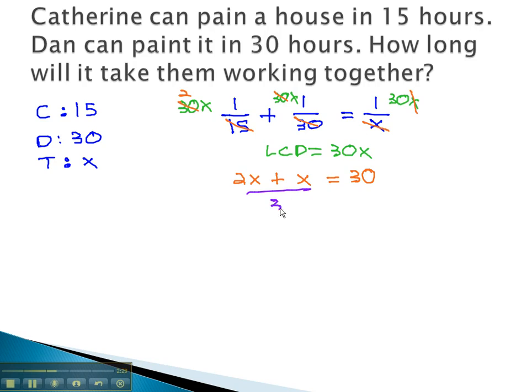Combining like terms tells us that 3x equals 30. And if we divide both sides by 3, we can conclude that x, or the teamwork time, is going to be 10 hours working together.